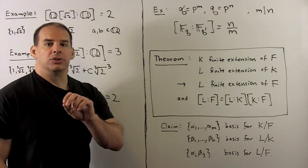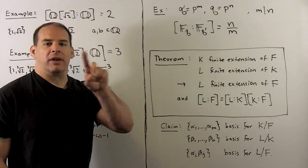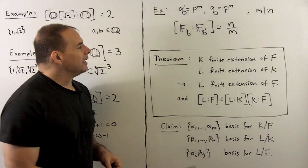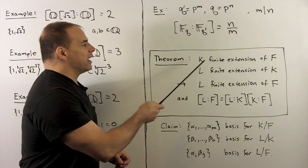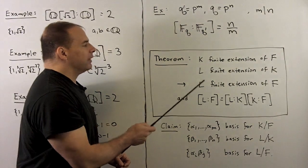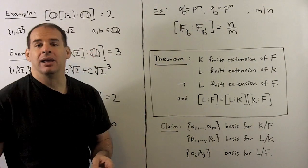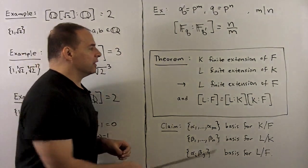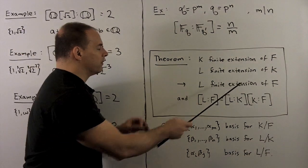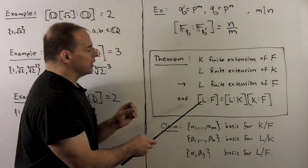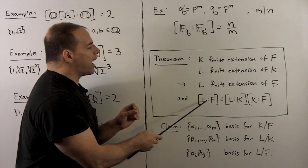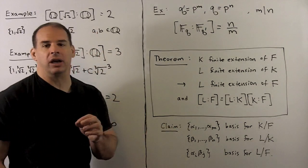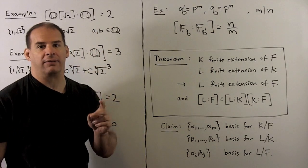Now, theorem — this gives us a way of computing with degrees. If K is a finite extension of F, and L is a finite extension of K, then L is also a finite extension of F, and we have the formula: [L:F] = [L:K] · [K:F].